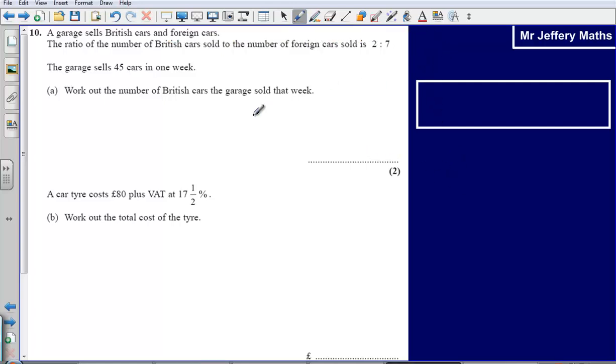This is question 10 from the calculator paper, 2008. Here we've got a question on ratio, and whenever we've got a question on ratio, I find it's helpful to draw out a little bar, like I've drawn on the right hand side here. Now what I'm going to do with this bar is I'm just going to label it up, and this bar is going to represent everything that I've got, so let's read the question first of all.